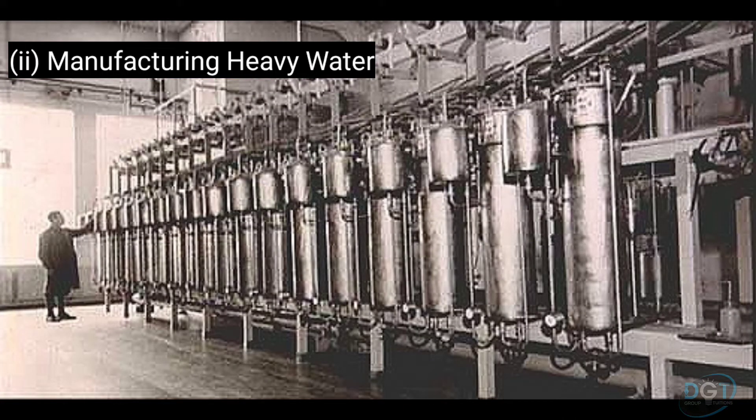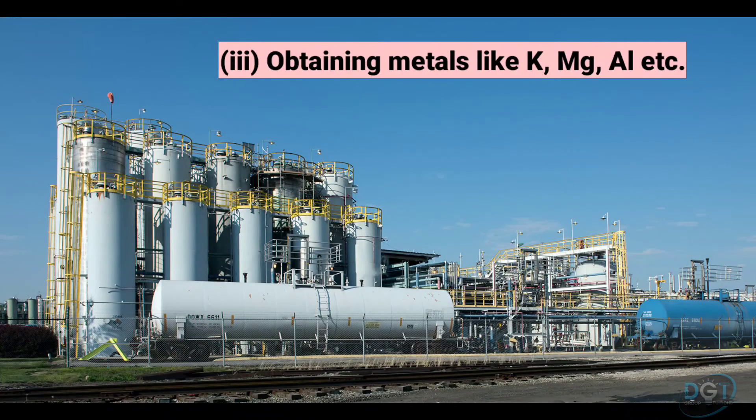Number two, it is used for manufacturing heavy water. Number three, metals like potassium, magnesium, aluminum, etc. are obtained by electrolysis of fused electrolytes.